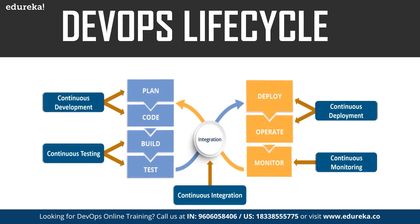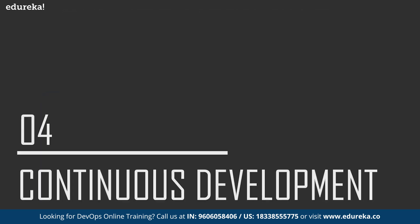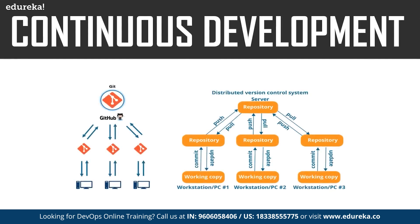The aim of DevOps is to shorten the systems development lifecycle while delivering features, fixes, and updates frequently in close alignment with business objectives. The first phase of the DevOps lifecycle is continuous development — involving planning and coding of the software. There are no tools for planning as such, but there are tools for maintaining the code. The vision of the project is decided during planning, and then actual coding begins. The code can be written in any language but is maintained using version control tools such as Git, SVN, Mercurial, CVS, and Jira.